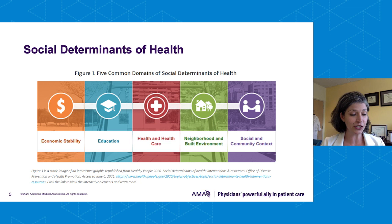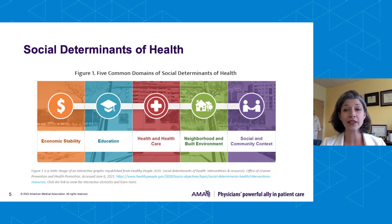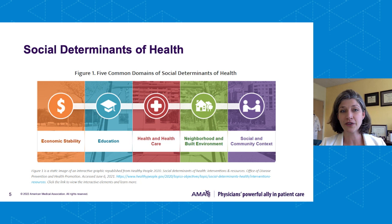What are social determinants of health? The formal definition is: social determinants of health are the conditions in which people are born, grow, work, live, and age, and the wider set of forces and systems that shape the conditions of daily life. Examples include the number of grocery stores or food options in an area, local housing policies, access to affordable housing, the quality of the education system, air quality, and policies like minimum wage standards.